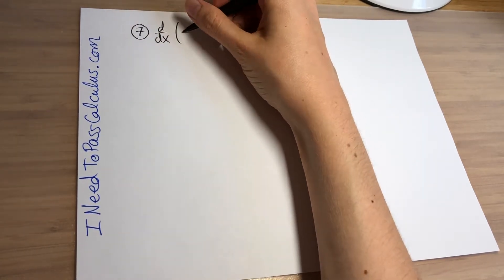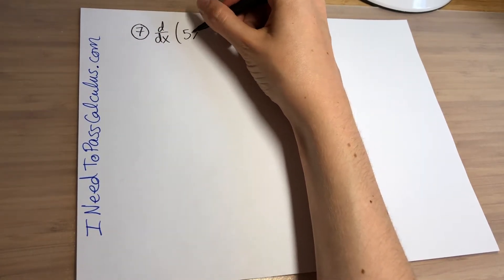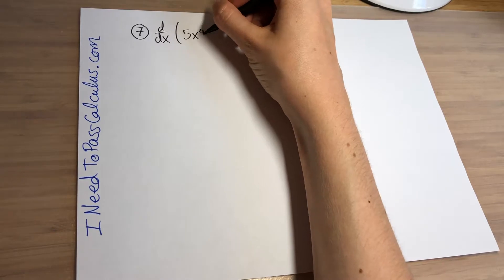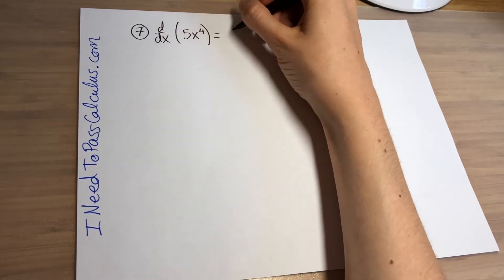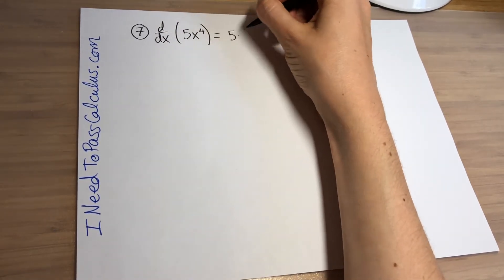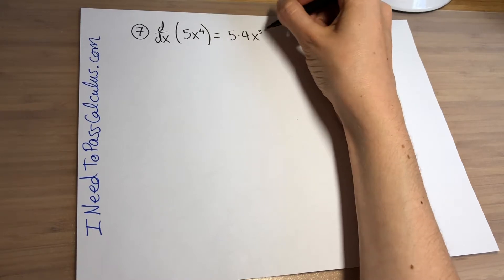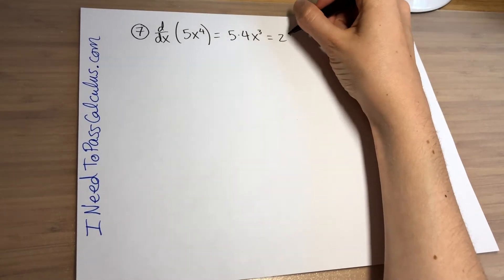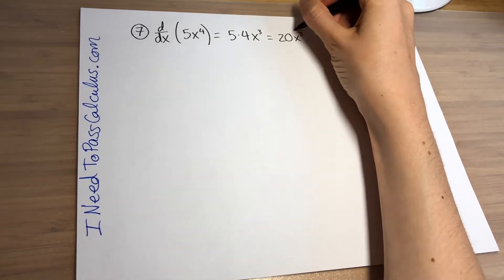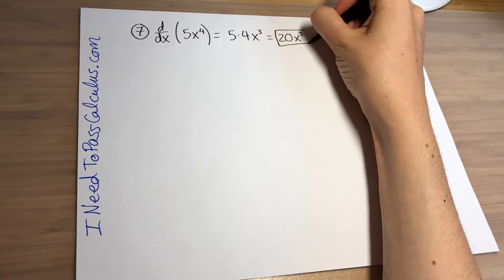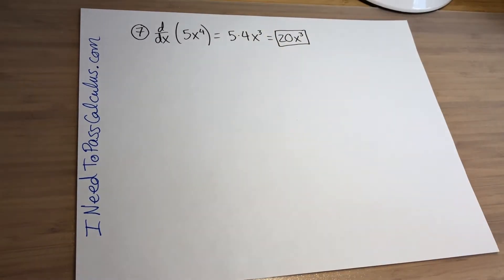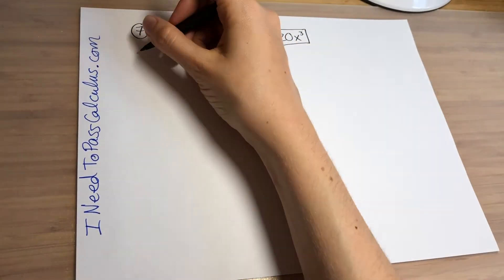Problem 7: let's take the derivative of 5x to the 4th. The 5 stays out front, you bring the 4 from the exponent down to multiply with the 5, and you subtract 1 from the exponent so the 4 becomes a 3. 20x cubed is your final answer.